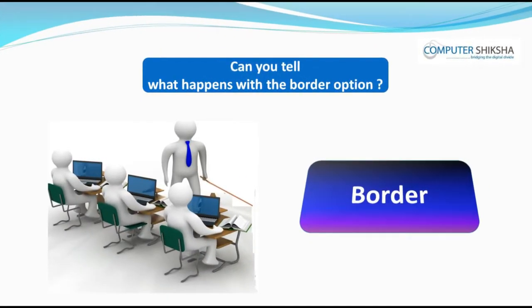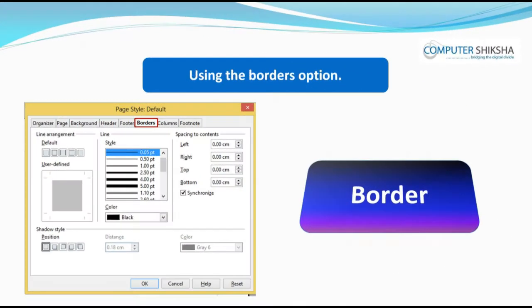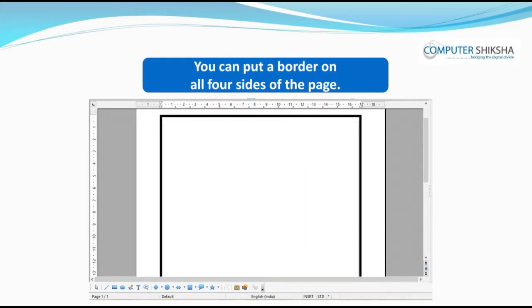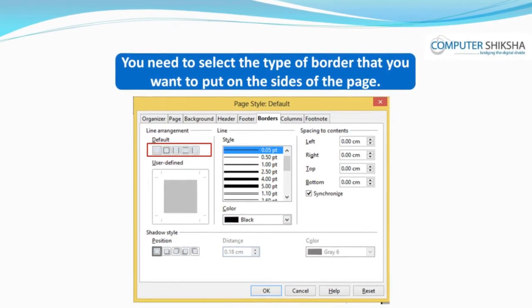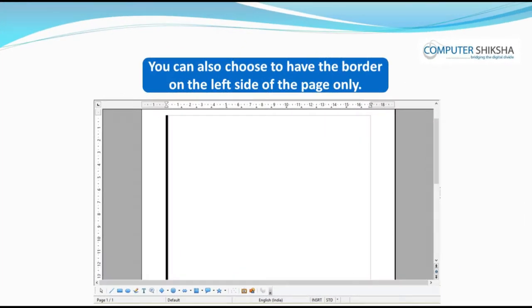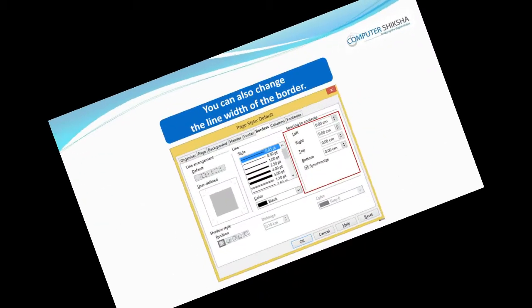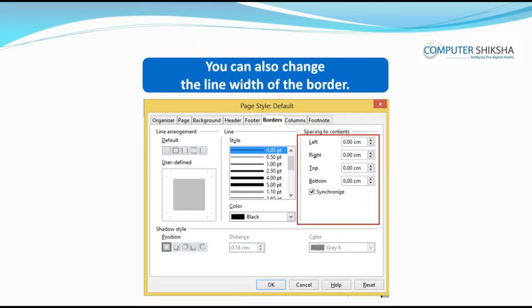Can you tell what happens with page background? Using page background, you can change the background of your page. You can also change the color of the background of the page and you can also put an image in the background. Now, can you tell what happens with the border option? You can use the border option to get a border on all four sides of the page. This brings a line on all four sides. You can put a border on just the top and bottom or just the left and right. You can change the size, style, and color of the line.